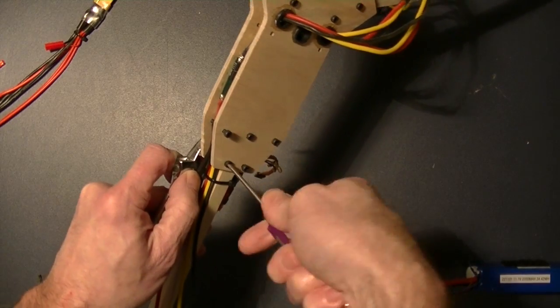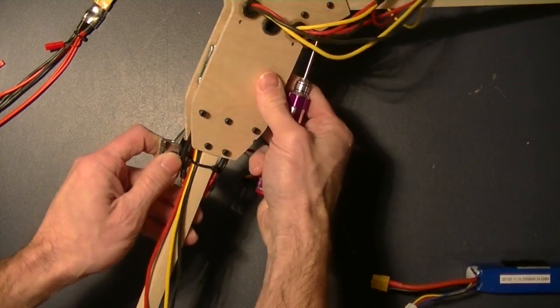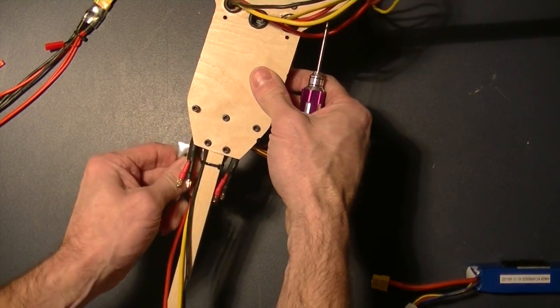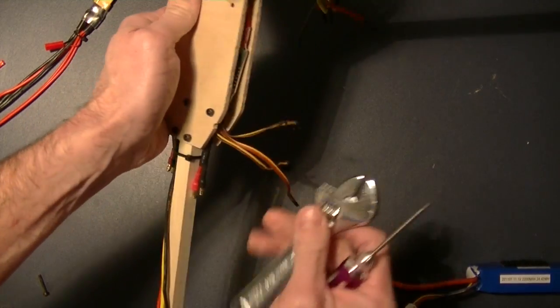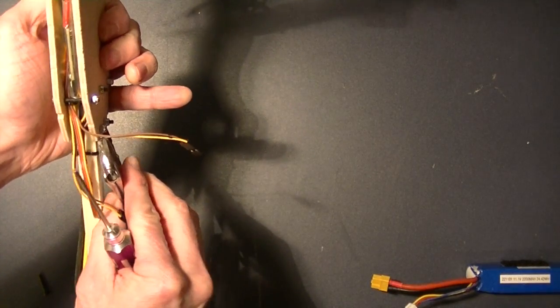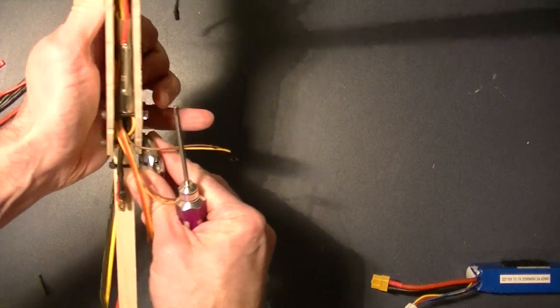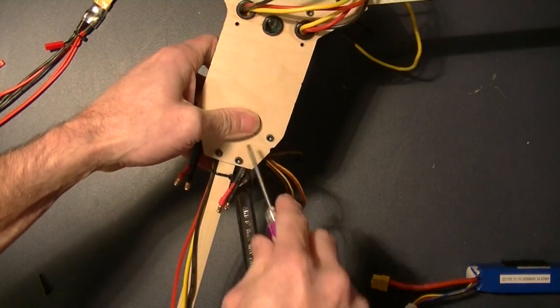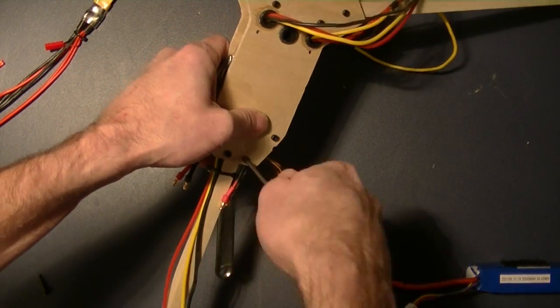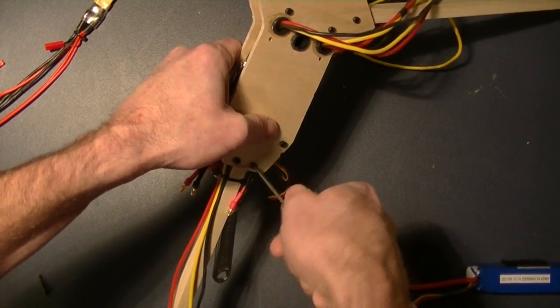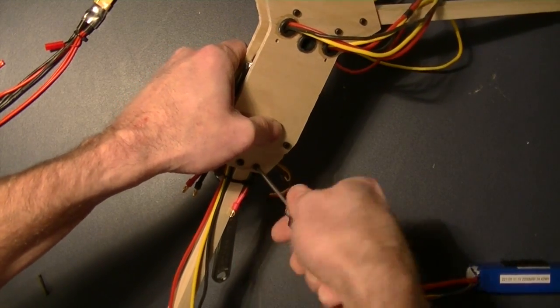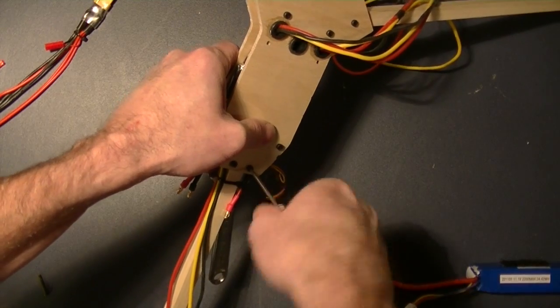My design has three screws that hold the tail boom in place. One of them is the indexing screw that actually goes through the hole in the boom. The other two clamp on the sides to hold it straight and also provide some rigidity to the frame structure. I should mention what size screws I'm using. These are all three millimeter screws.